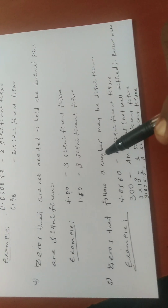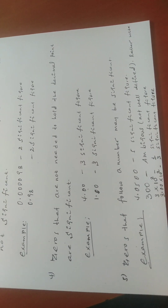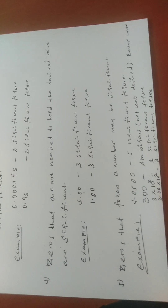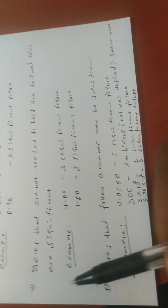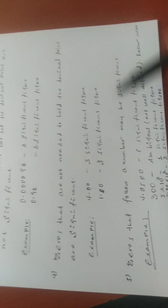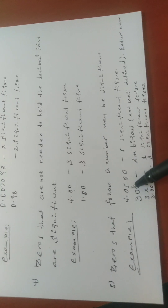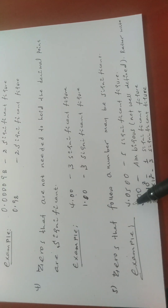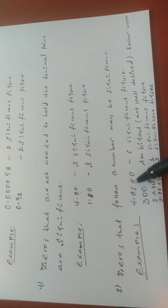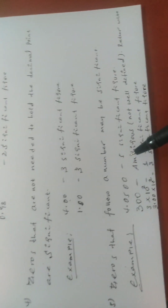The fifth rule: zeros that follow a number may be significant. There is some ambiguity because in some cases they are not considered significant. For example, 4.0500 — the two trailing zeros follow the 5, so they are considered significant. Therefore, 4.0500 has five significant figures.